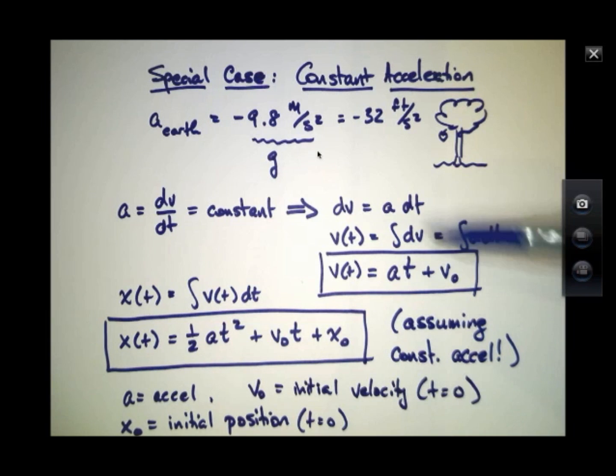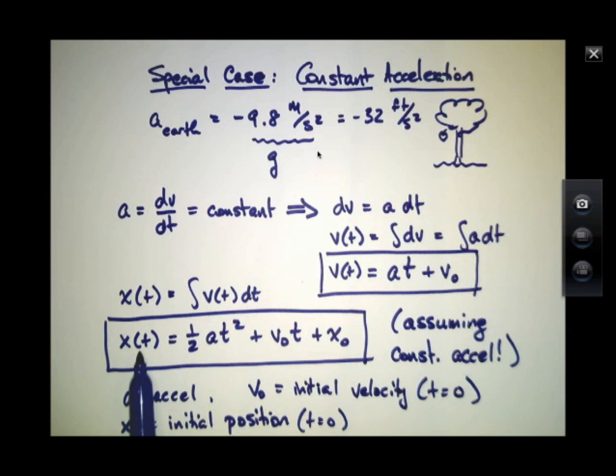In other words, if I plug in t equals 0 to this expression, because it's a function of time, this first term is 0, and v not is that velocity that would exist at time t equals 0. It's the initial condition. In the same way, if I plug in t equals 0 here for this function, this term and this term are 0, and x not ends up being the position that is there at that initial time.